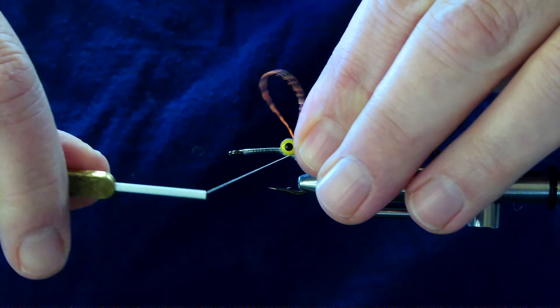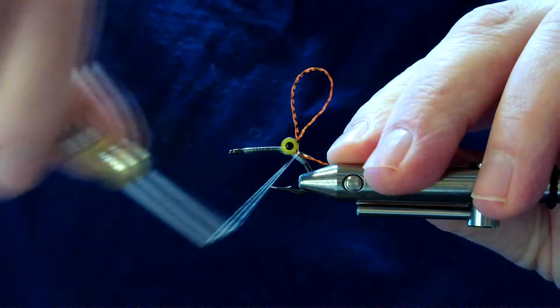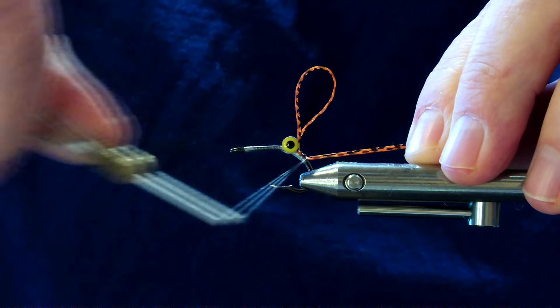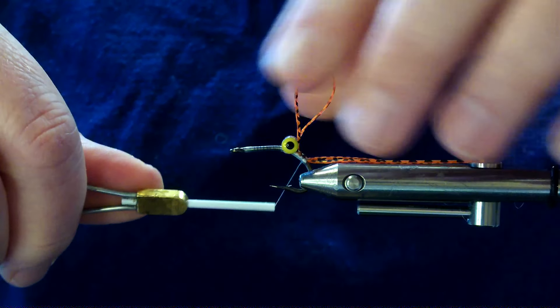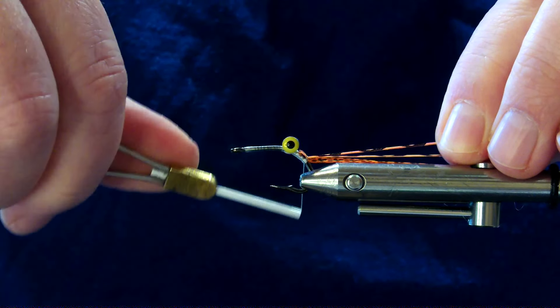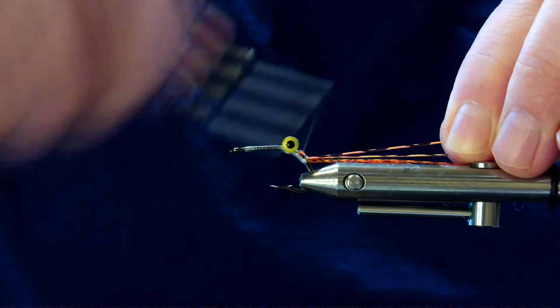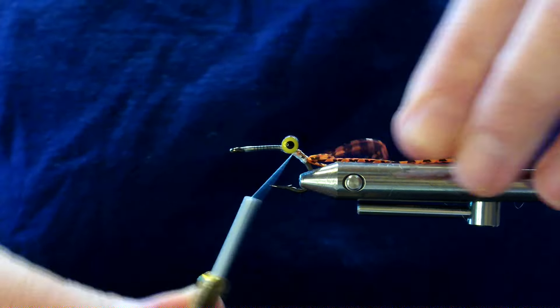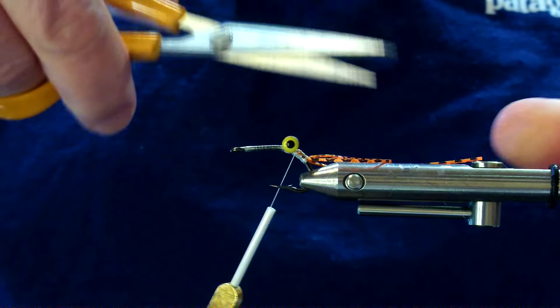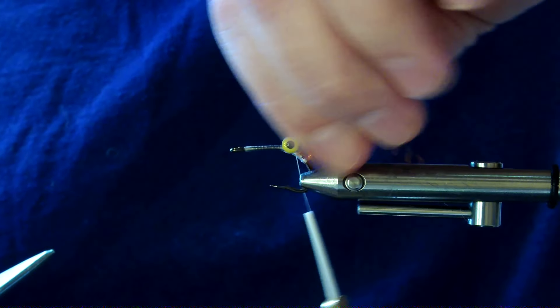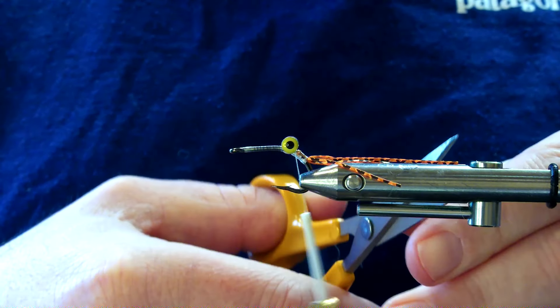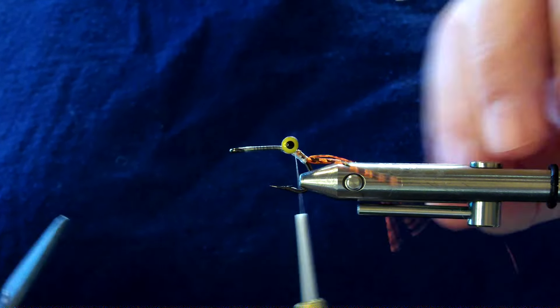Loop towards the eye of the hook about a third of the way down the double strand, and then I'm just tying it in, wrapping my thread back, and then I'm going to pull that loop, tie it directly on top so that when I split it, it goes on either side.